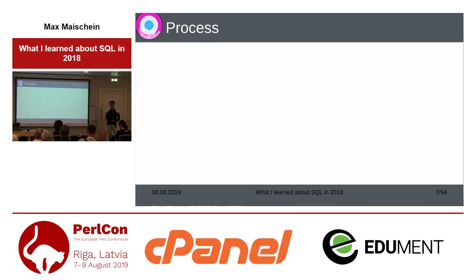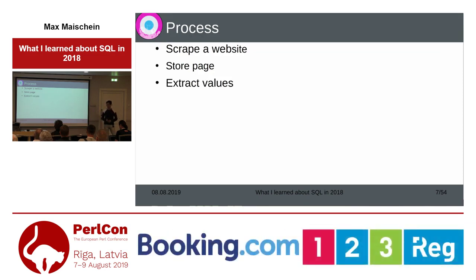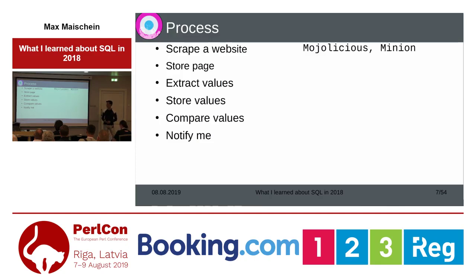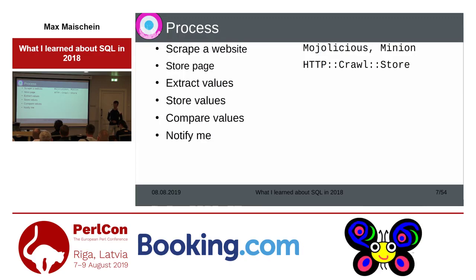How does the scraper process work in general? First, I scrape the website, then I store that HTML page somewhere, then I extract the values from that HTML and store these values in the database, and then I compare these values and send an email. The modules I use are basically Mojolicious and Minion for scraping. Storing the HTML pages is in a module I haven't released yet — the name is HTTP crawl store.